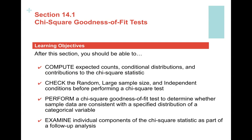The four learning objectives for this section are: computing expected counts, looking at conditional distributions again — we've done this back in descriptive statistics — figuring out what contributes to the chi-square test statistic, and then checking the three conditions.